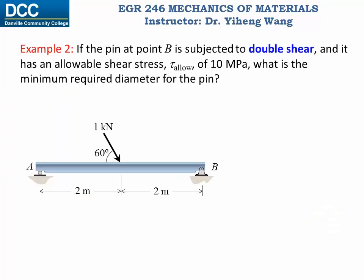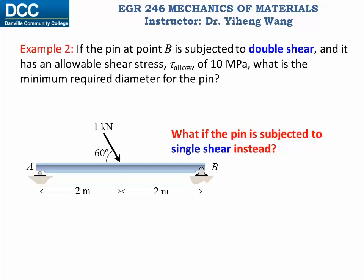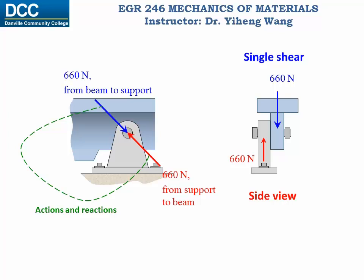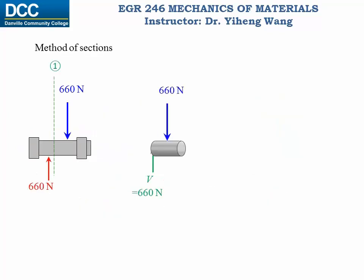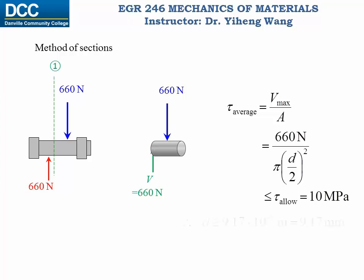What if the pin were not subjected to double shear but single shear? That would mean the support bracket has only one supporting leaf. Through analysis, the maximum internal shear force would then be 660 newtons, and carrying out the calculation gives a minimum required diameter of 9.17 mm — more than 40% larger than the previous pin diameter. So ask yourself: would you choose double shear or single shear in your design?